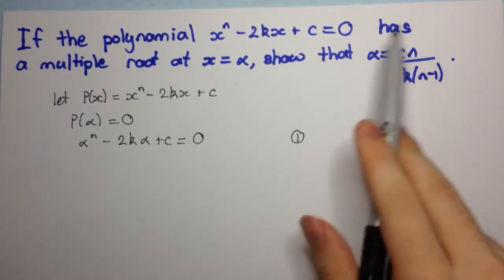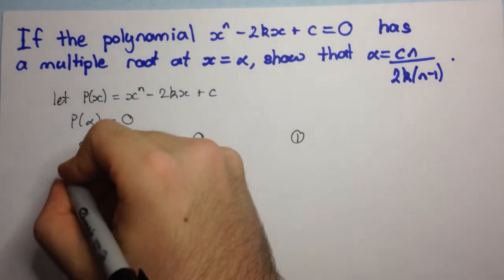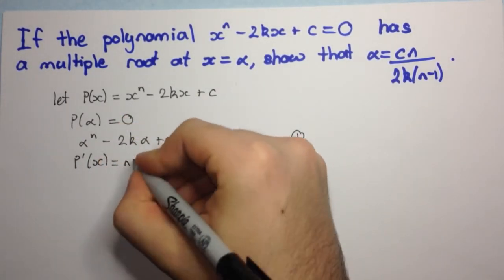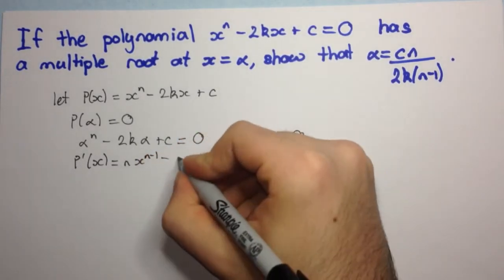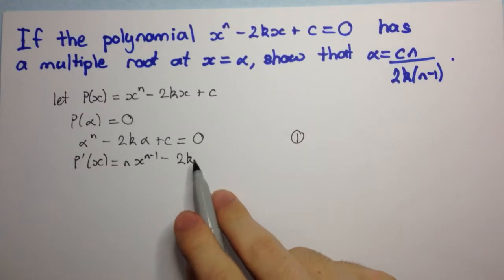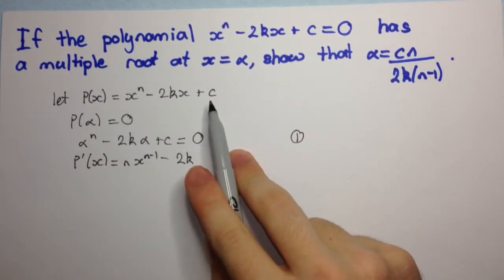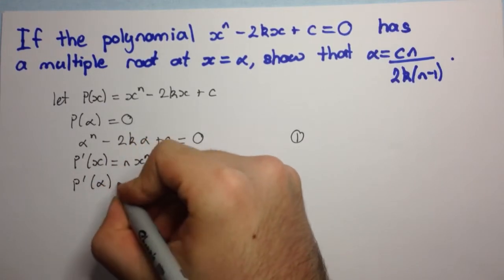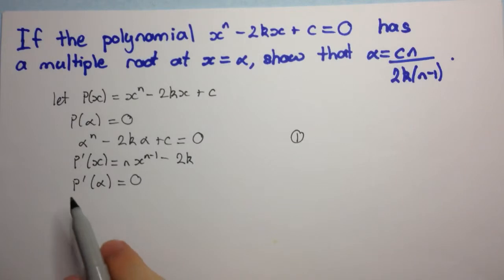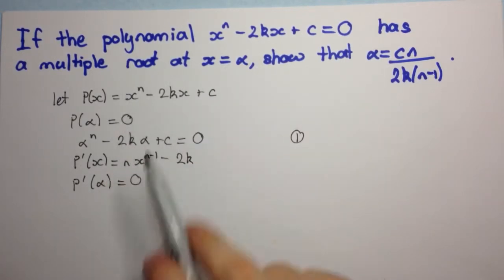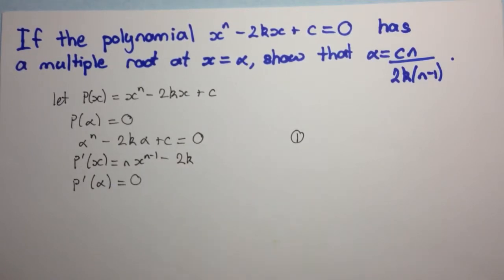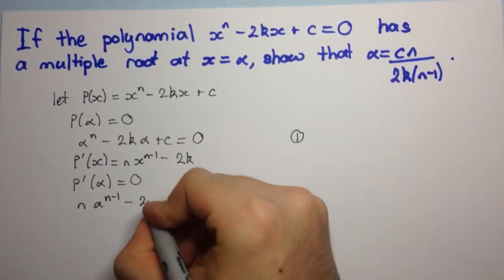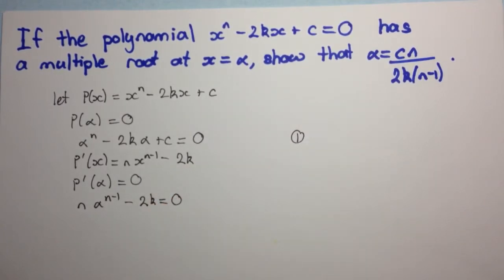We're also told it has a multiple root at x equals alpha, so we need to compute the derivative. p dash of x equals n times x to the n minus one, minus 2k — since the derivative of 2kx is just 2k, and the derivative of a constant is zero. Since we have a multiple root, p dash of alpha equals zero. Substituting alpha gives us n alpha to the n minus one minus 2k equals zero.